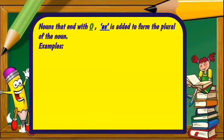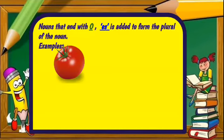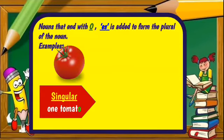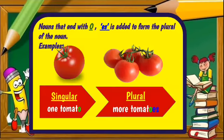Now let's look at nouns that end with O, where ES is added to form the plural of the noun. Let's go into our example. Singular: one tomato. Plural: more tomatoes. So, tomato ends with O. To form the plural, we add ES.